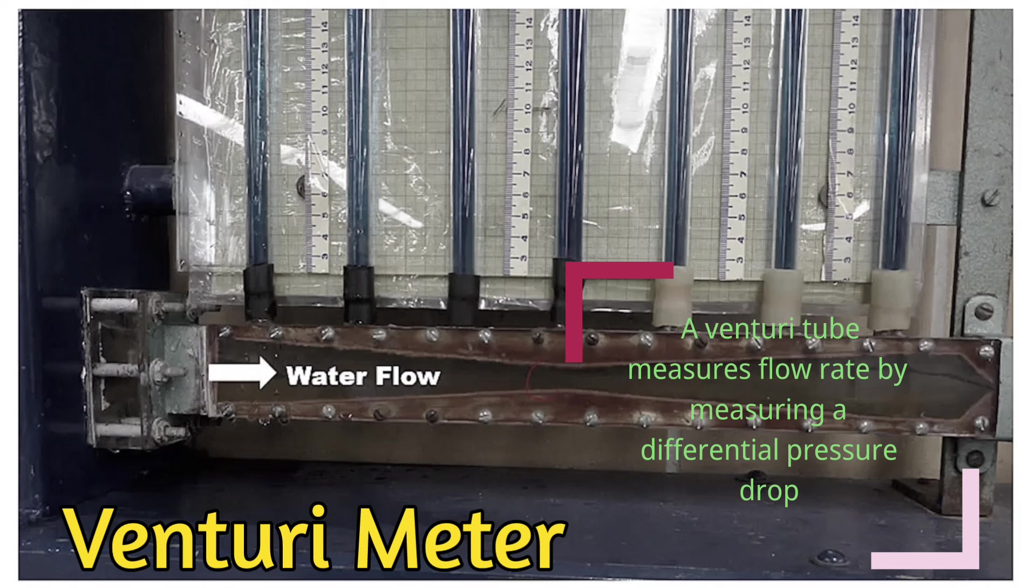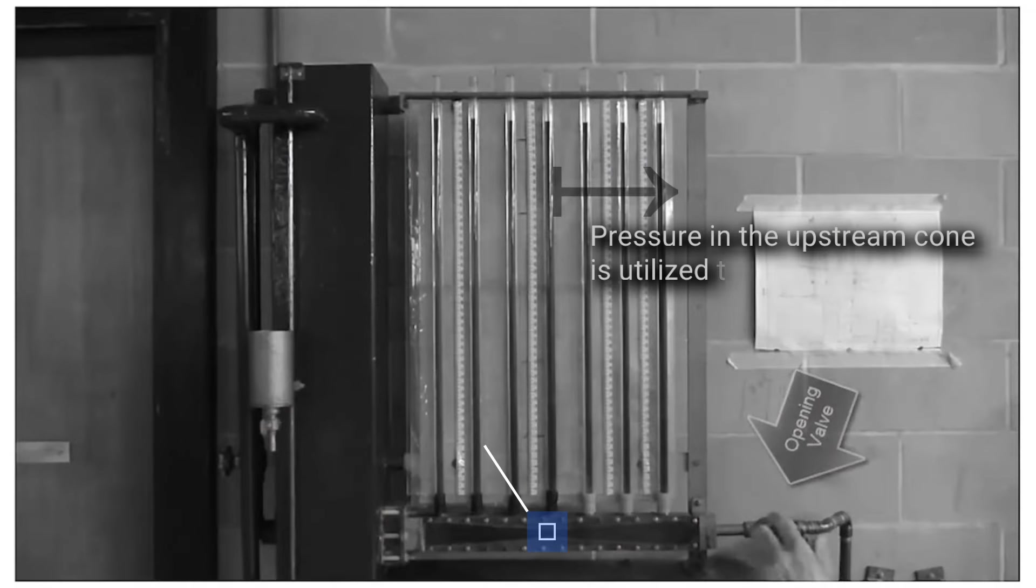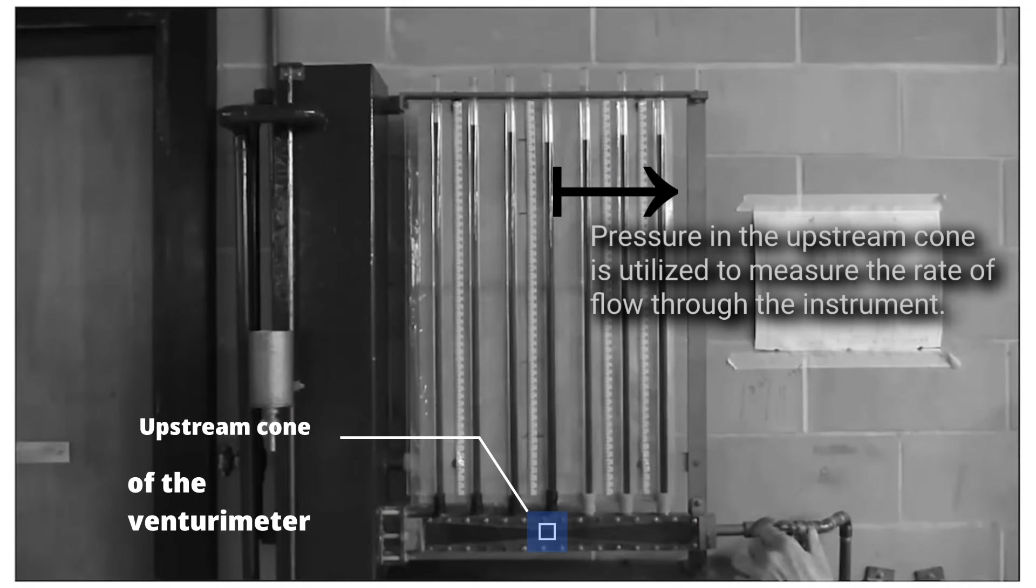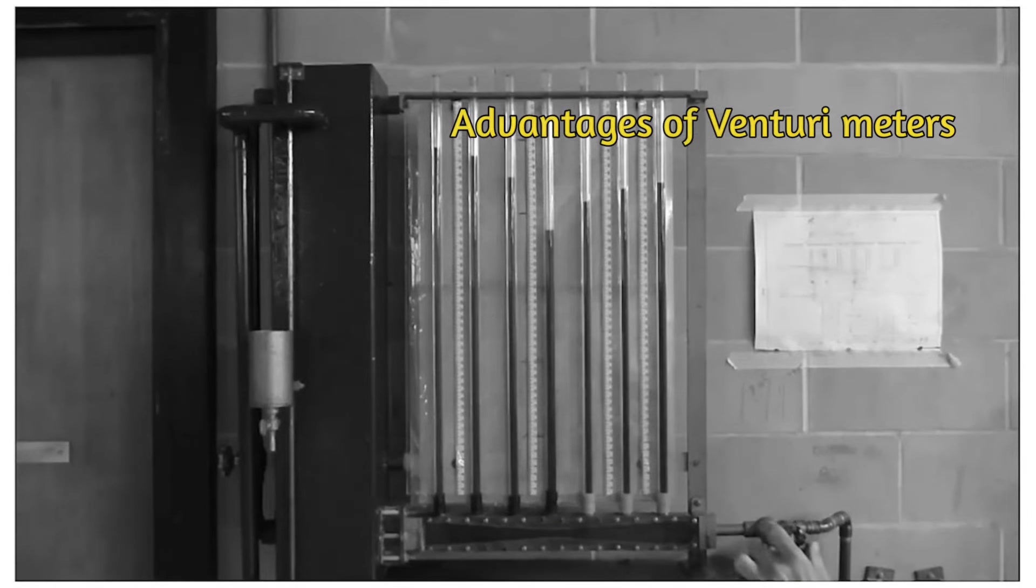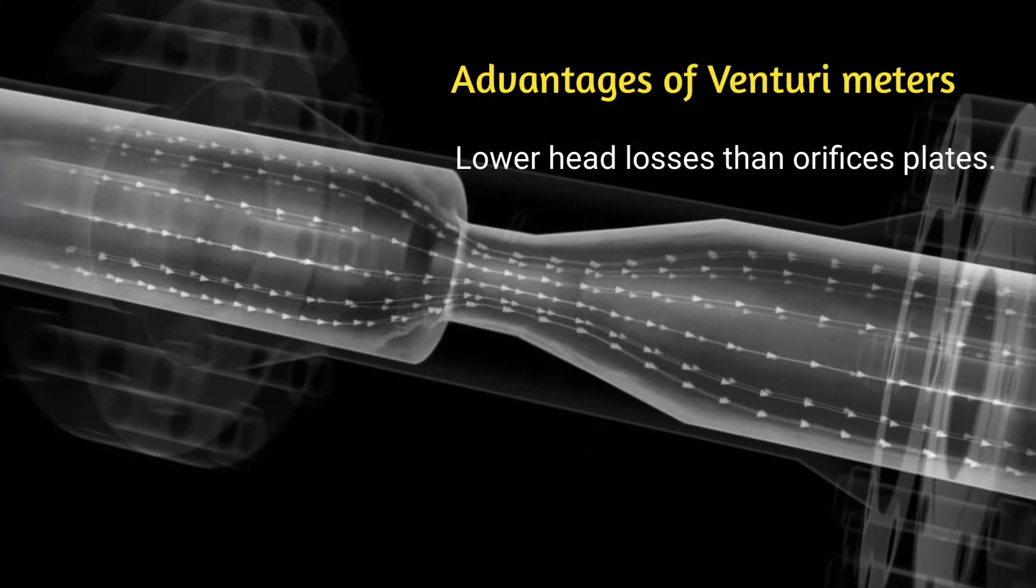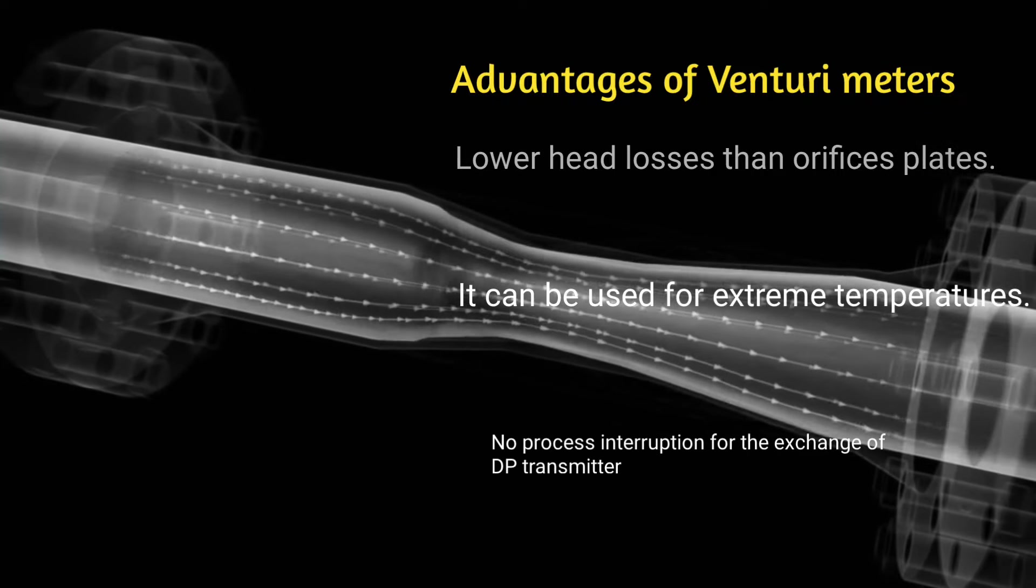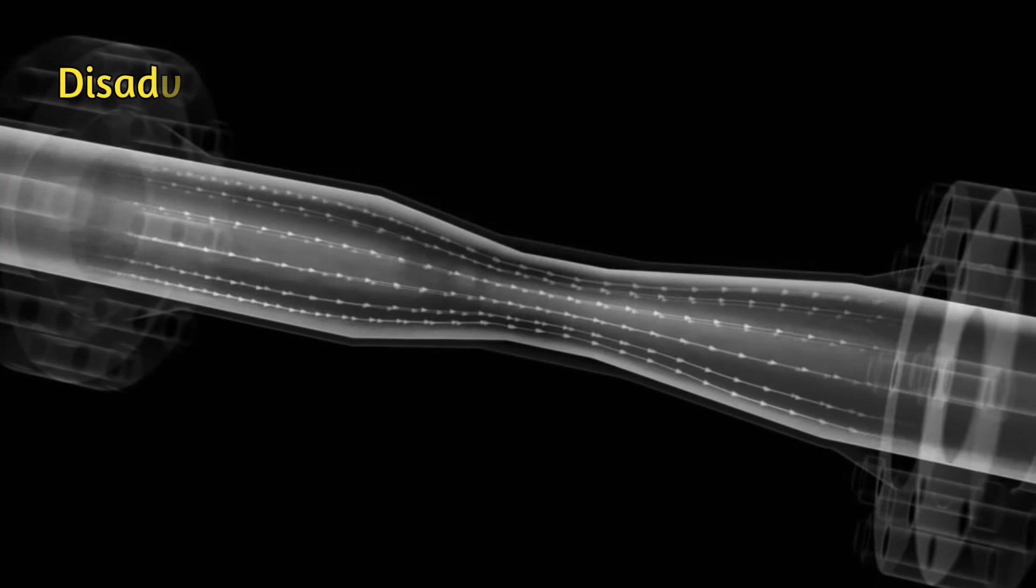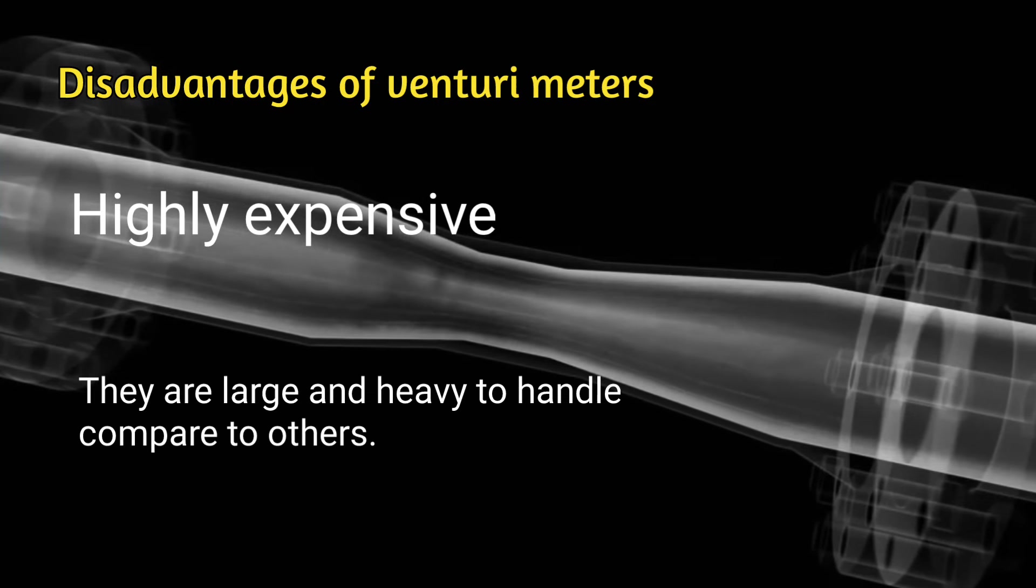Venturi meters. A venturi tube measures flow rates by constricting fluids and measuring a differential pressure drop. In the upstream cone of the venturi meter, velocity is increased and the pressure is decreased. Pressure in the upstream cone is utilized to measure the rate of flow through the instrument. Advantages of venturi meters: lower head losses than orifice plate, reducing the capital expenditure for pumping equipment, it can be used for extreme temperature, no process interruption for the exchange of DP transmitter. Disadvantages: highly expensive, they are larger and heavier to handle compared to others.